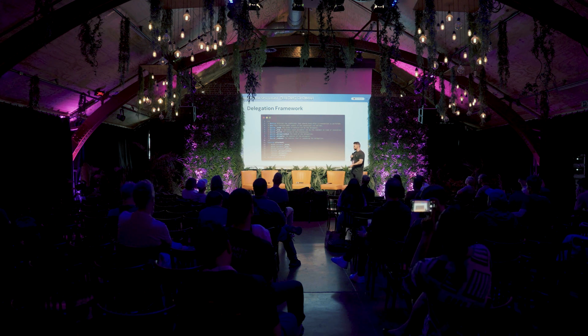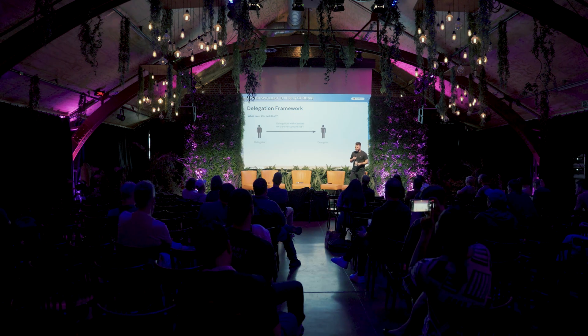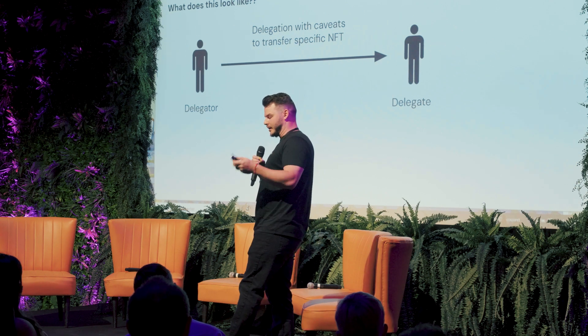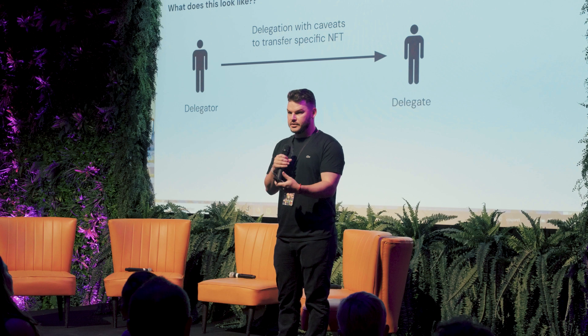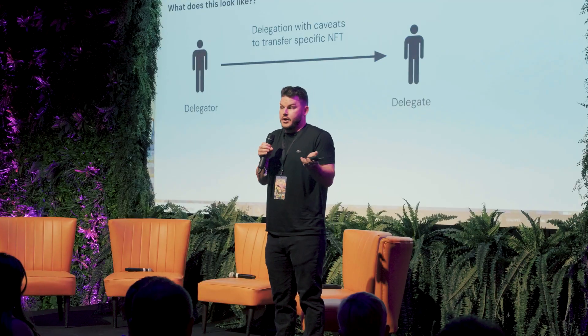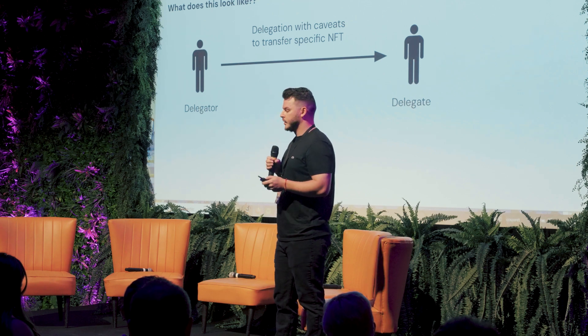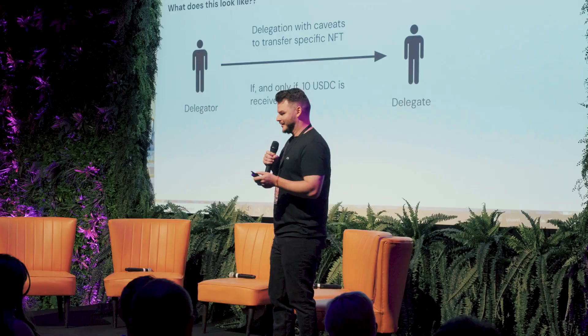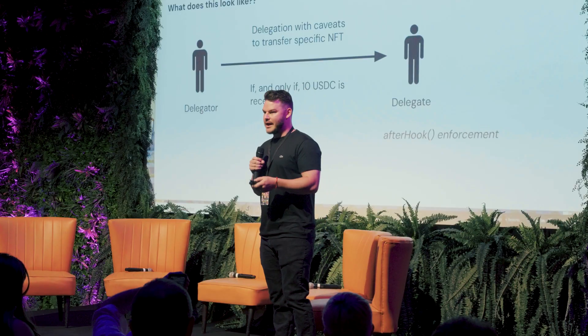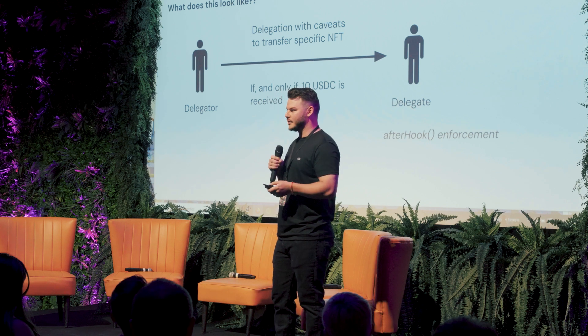The after hook has the same parameters. Here's another example: the delegator is giving a delegation — the right to transfer a specific NFT to the delegate. That would be a before hook, so you can say I'm going to limit it to this NFT address with this token ID and transfer, and that's all you can call. The delegate can choose to transfer it to themselves or someone else. But what if we spice this up — the delegator says you can transfer this NFT, but only if I get 10 USDC in return. That would be used in the after hook. Now we're starting to get into something like intents.